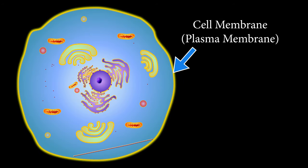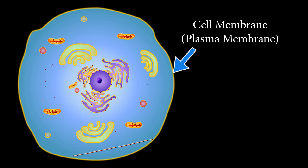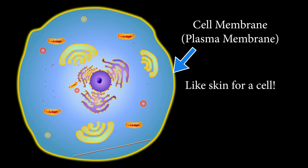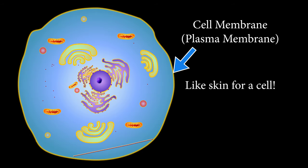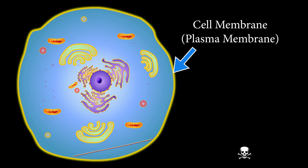All cells are completely surrounded by a membrane that separates them from their environment, kind of like how your skin completely covers your body. This cell membrane is sometimes called the plasma membrane, and it acts as a barrier, regulating what gets in and out of the cell.